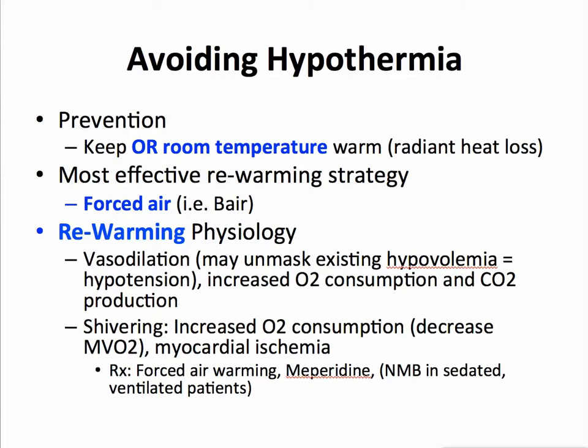If the patient shivers, their oxygen consumption can go up dramatically — several hundred percent — and myocardial ischemia can occur. How do we treat shivering if it occurs? Forced air warming is helpful. Demerol or meperidine is unique in its ability to reduce shivering. And in a patient who is already sedated and ventilated, neuromuscular blockade will stop the shivering.